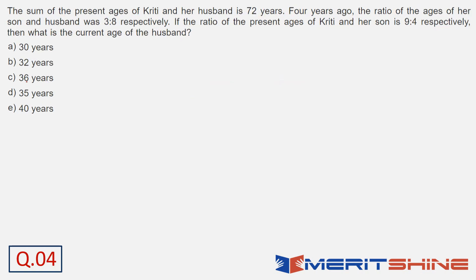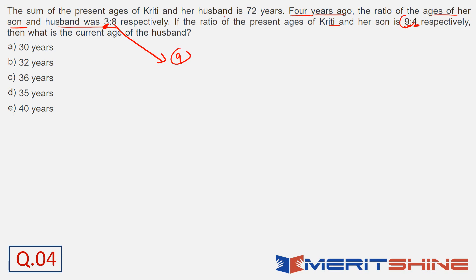Question number 4. Compare these two scenarios. Four years ago, the ratio of the ages of her son and husband was 3 to 8, so son's age was 3 units. Present age ratio of Kirti and her son is 9 to 4, so son's present age is 4 units. It increased by 1 unit in 4 years. Husband's age: this was 8 units and now it would be 9 units. Kirti's age is also 9 units — they're equal. Combined age is presently 72 years. So the answer is 72 by 2, which is 36 years.